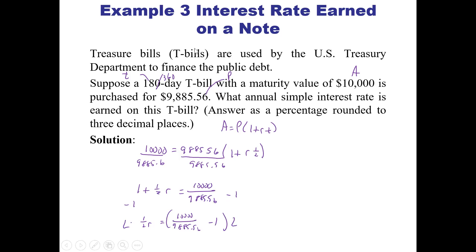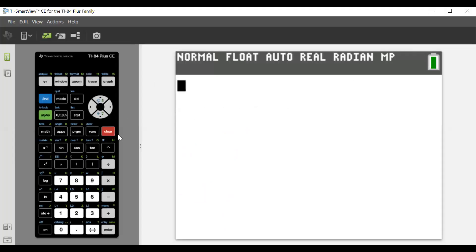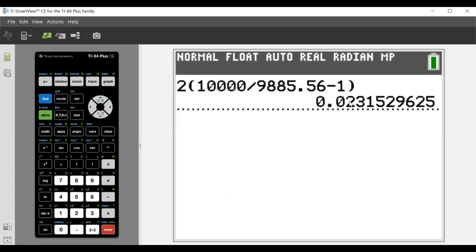And so now, we'll go to our calculator. Let's clear that out. So now, we have to type in 2 times 10,000 divided by 9,885.56 minus 1. And hopefully, we get our interest.